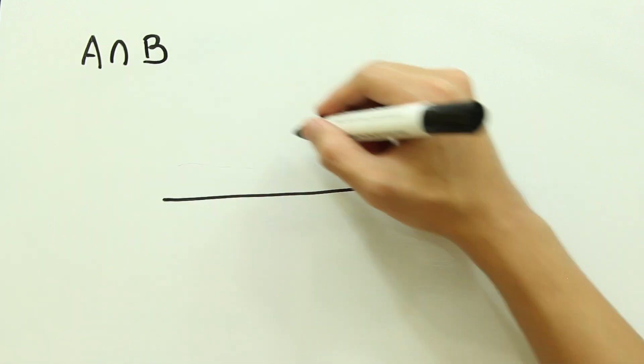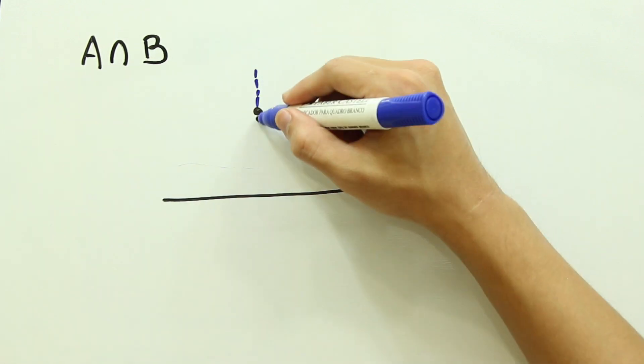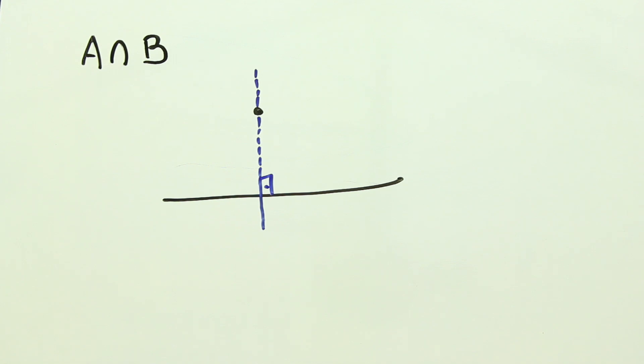Now, A intersection B, a fold that's perpendicular to a line and passes through a point. This intersection gives only one answer, so let's map this construction.